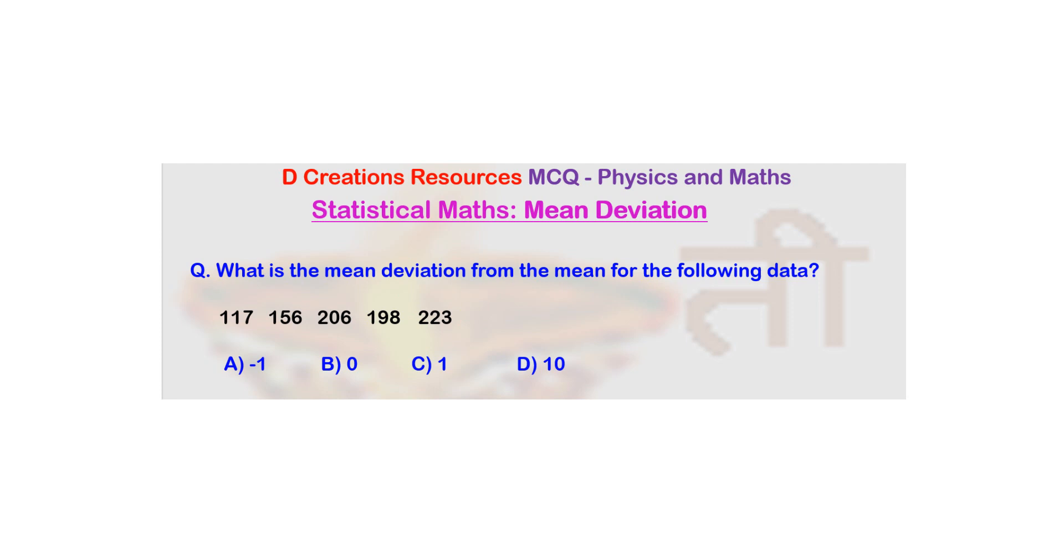And the options are -1, 0, 1, and 10. So you have to find out the mean deviation for this data. Now if you know the concept and procedure of finding out mean deviation, just pause this video, find it out and then check the answer. If you are not aware of it, let's have a look at it.